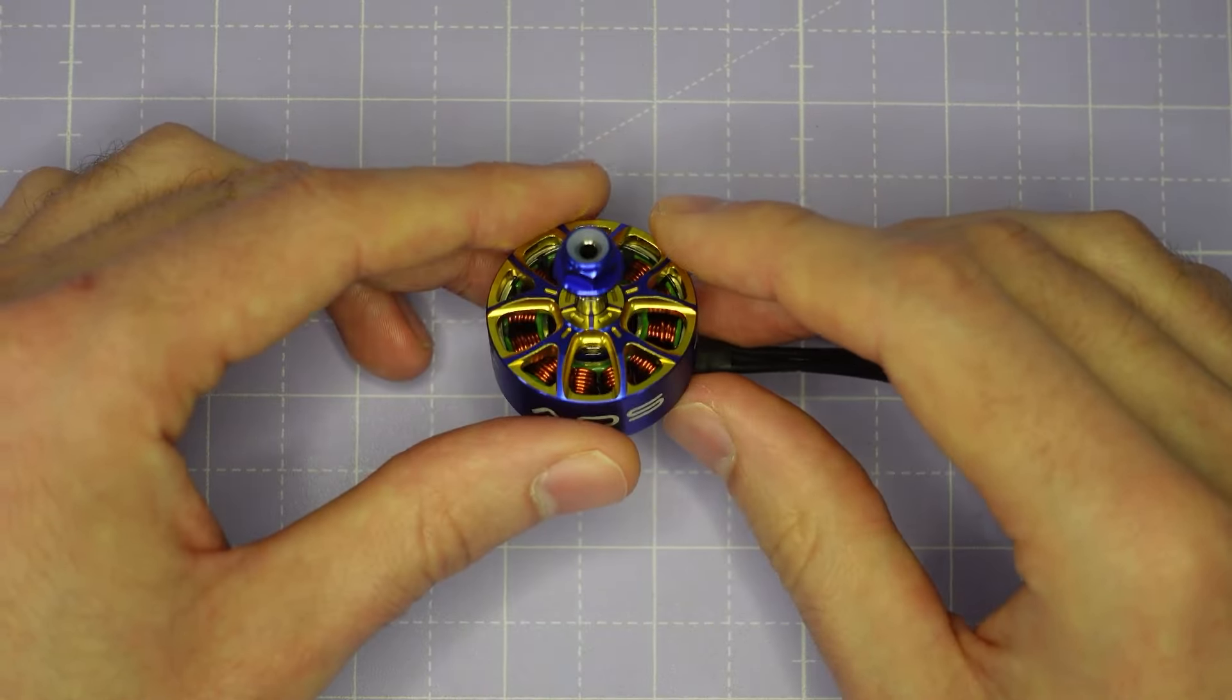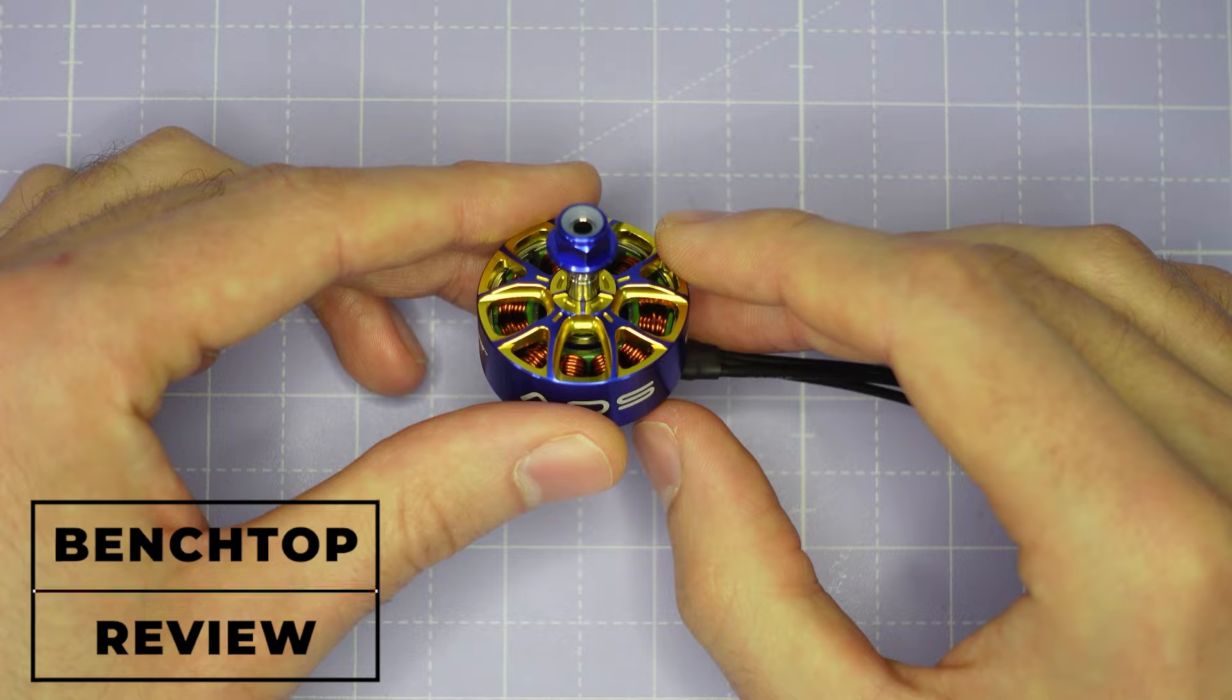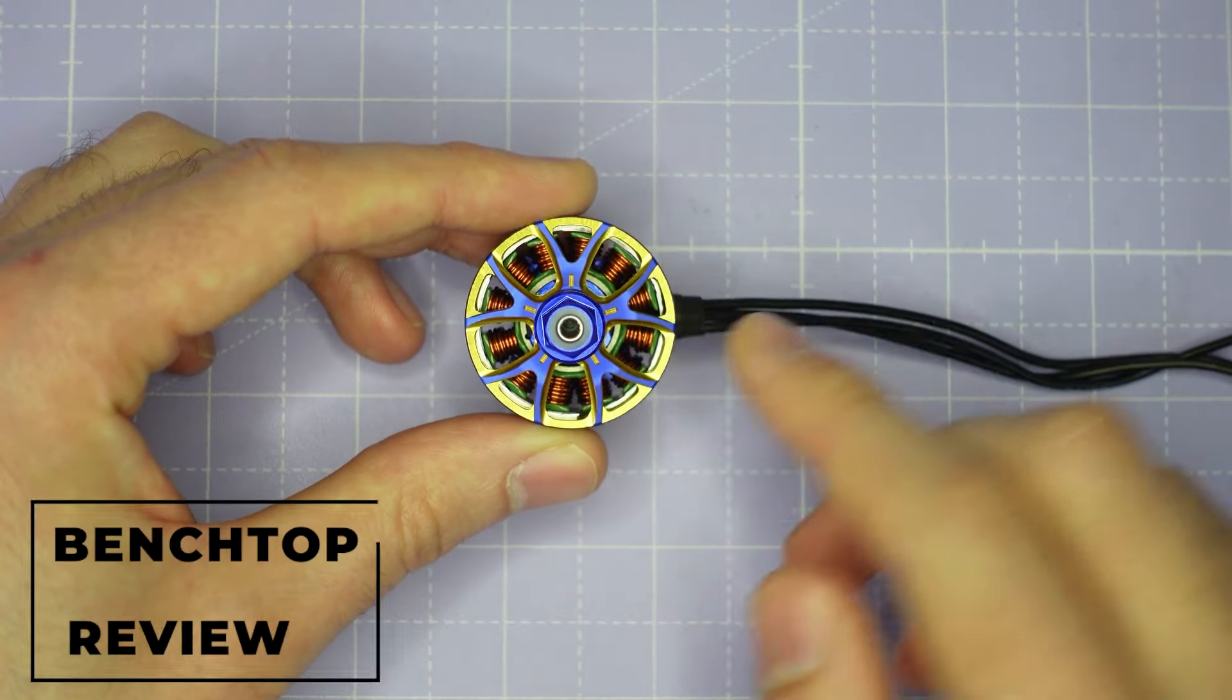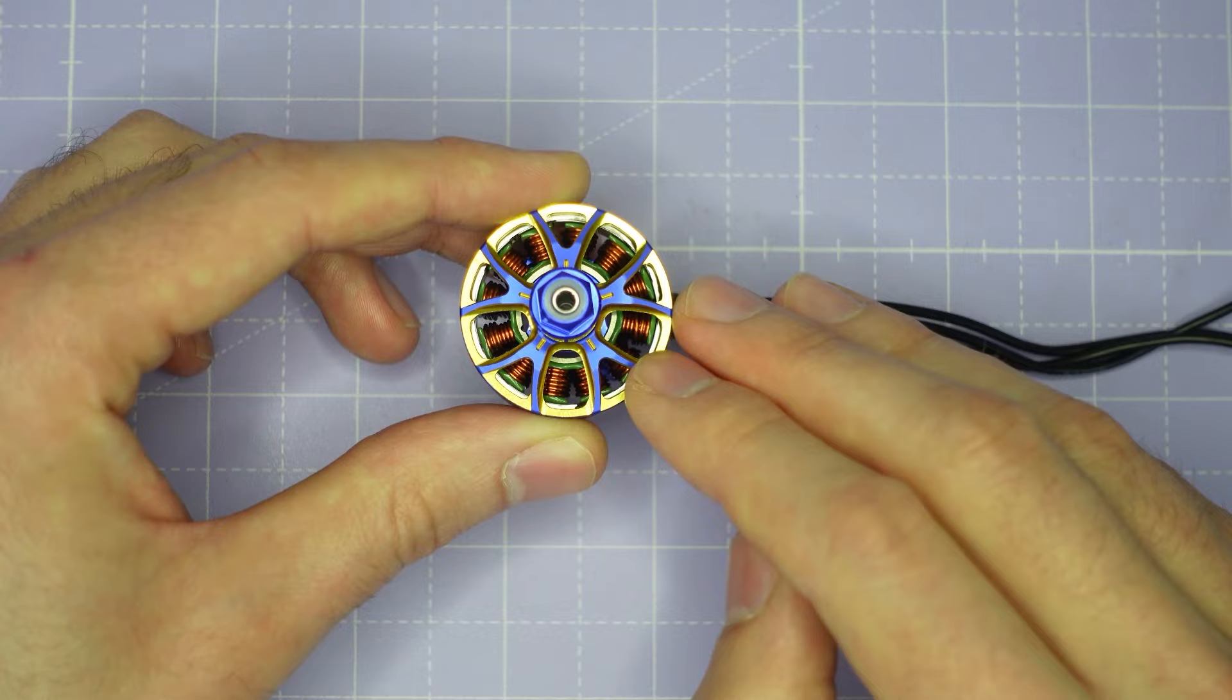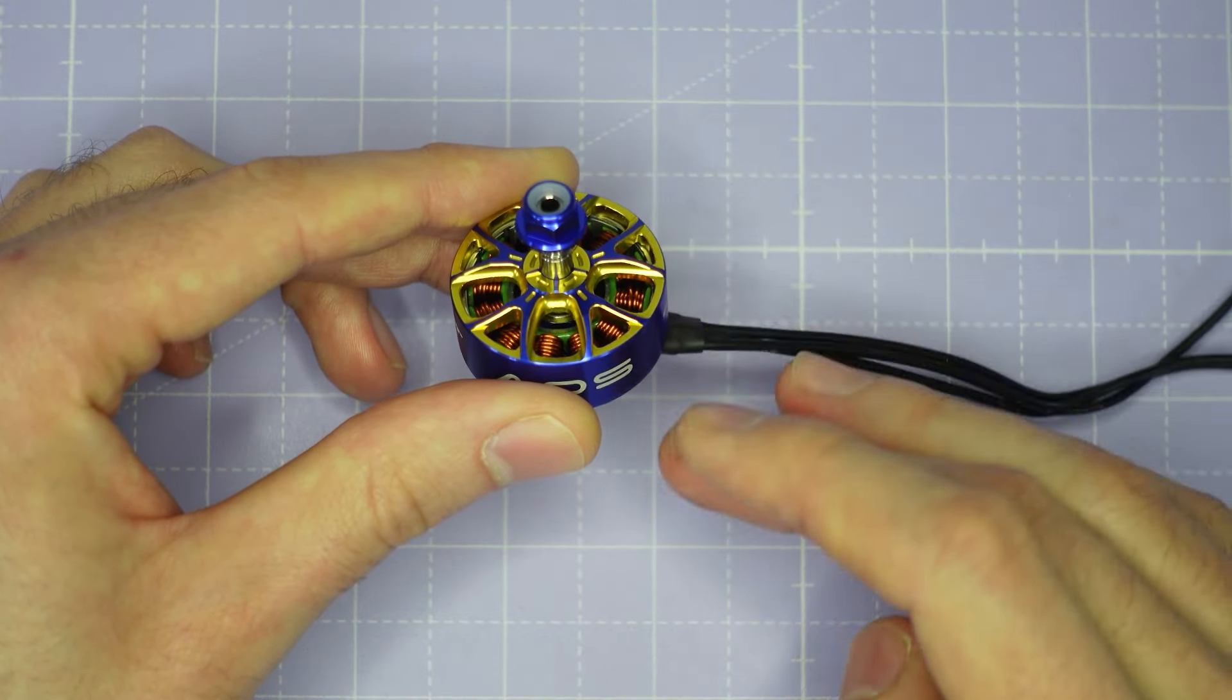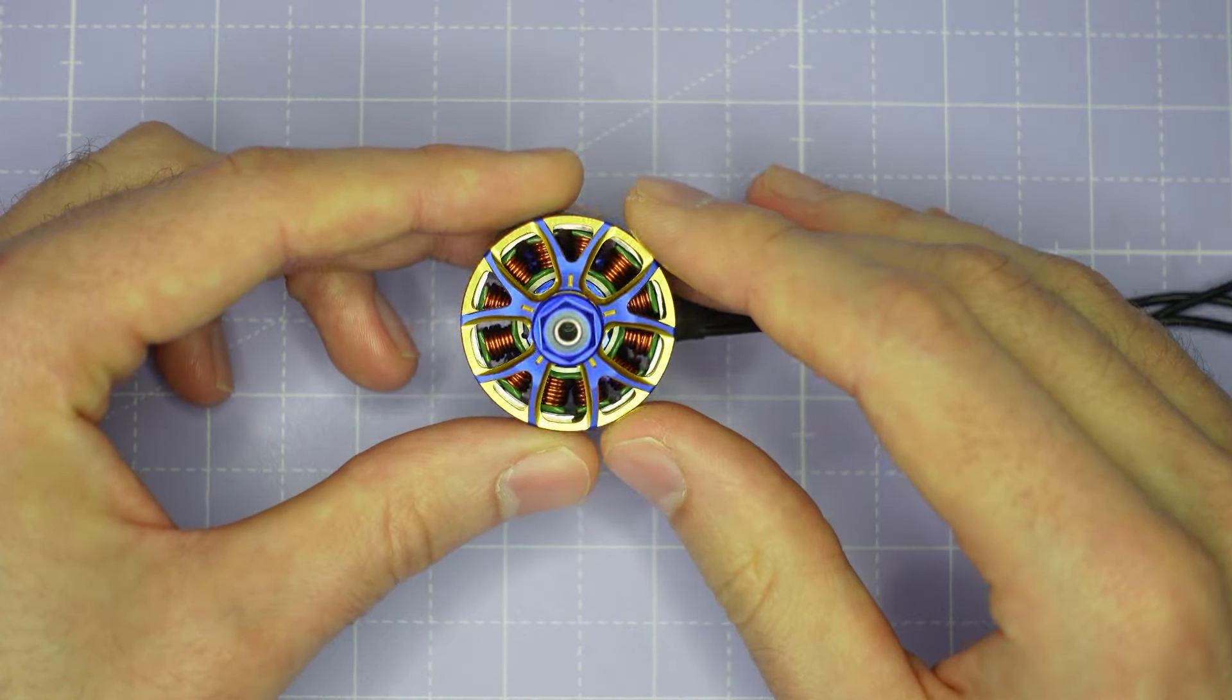It's a lot to cover in one video, so let's not waste any more time. Let's dive right into it. Alright, so let's take a look at this Supernova 2807 on the bench, starting with the top of the bell design. You can see that we have a five twin spoke layout with lots and lots of open area to allow air to flow down through the motor and keep everything nice and cool.